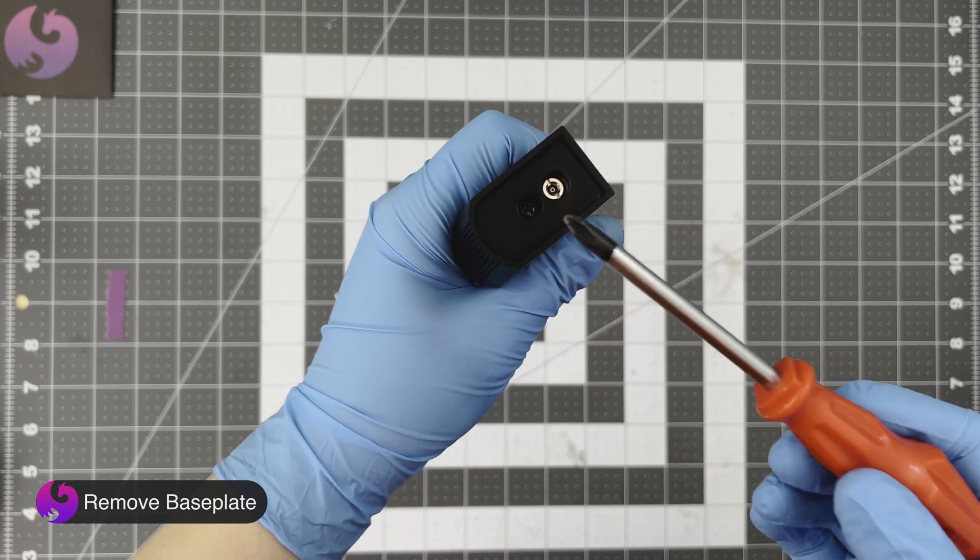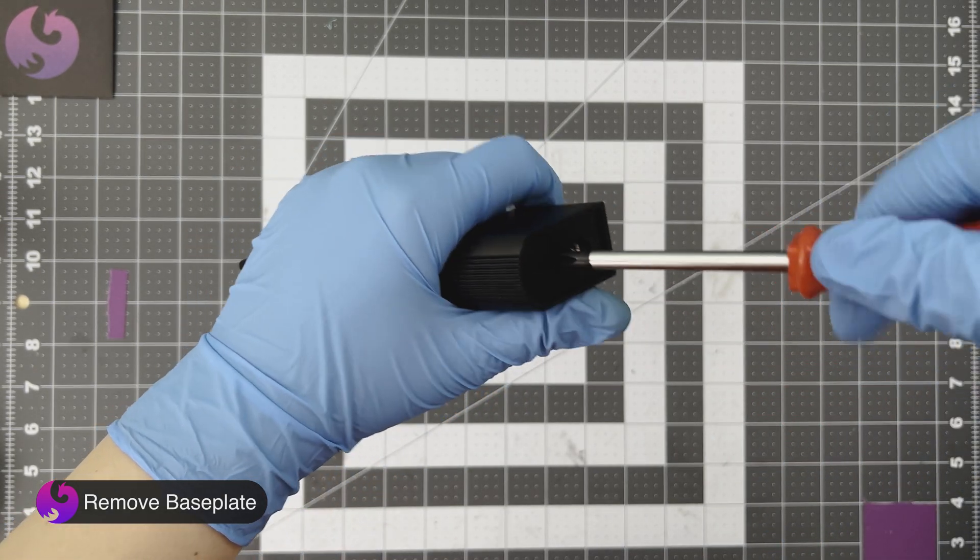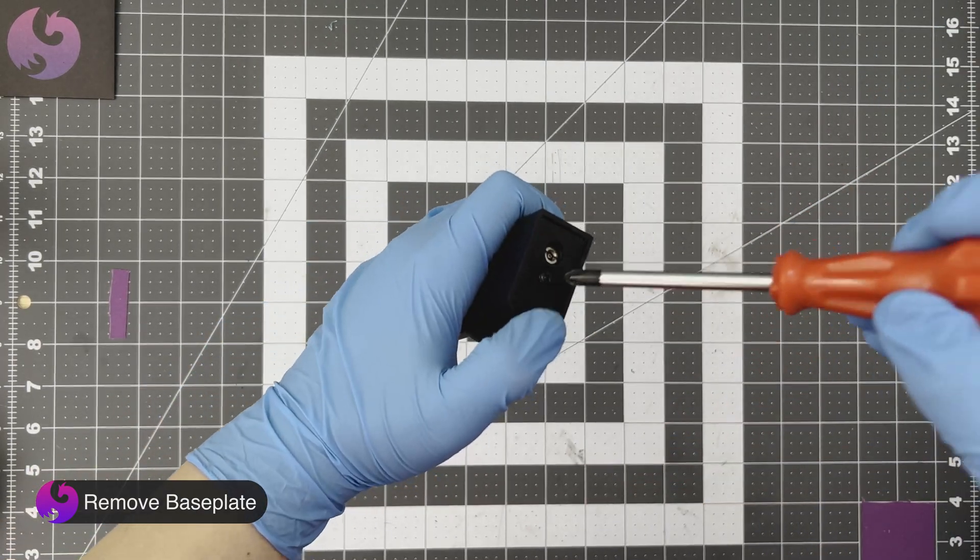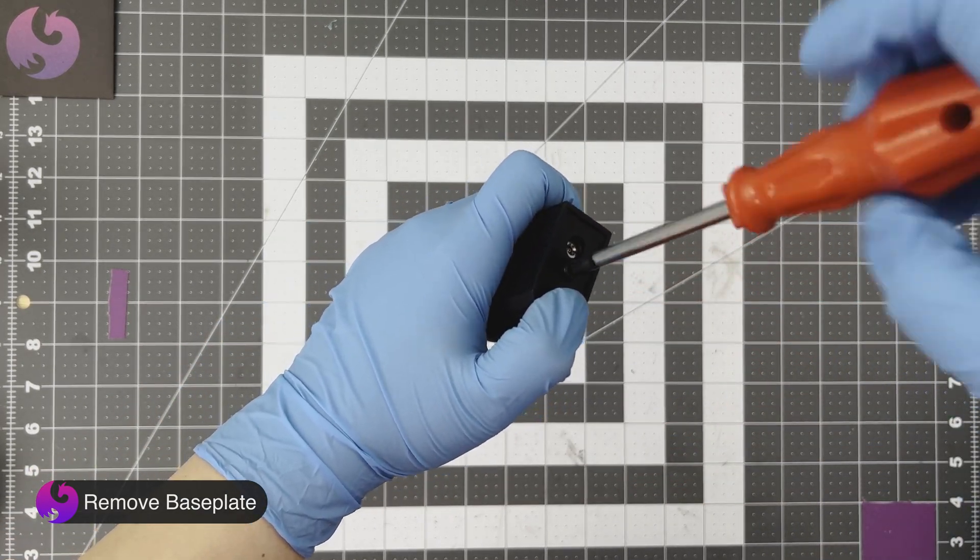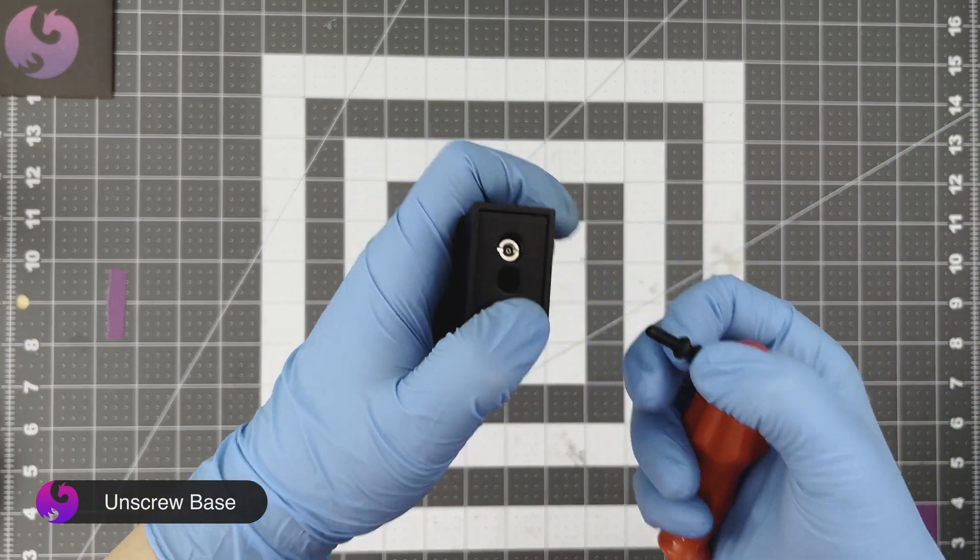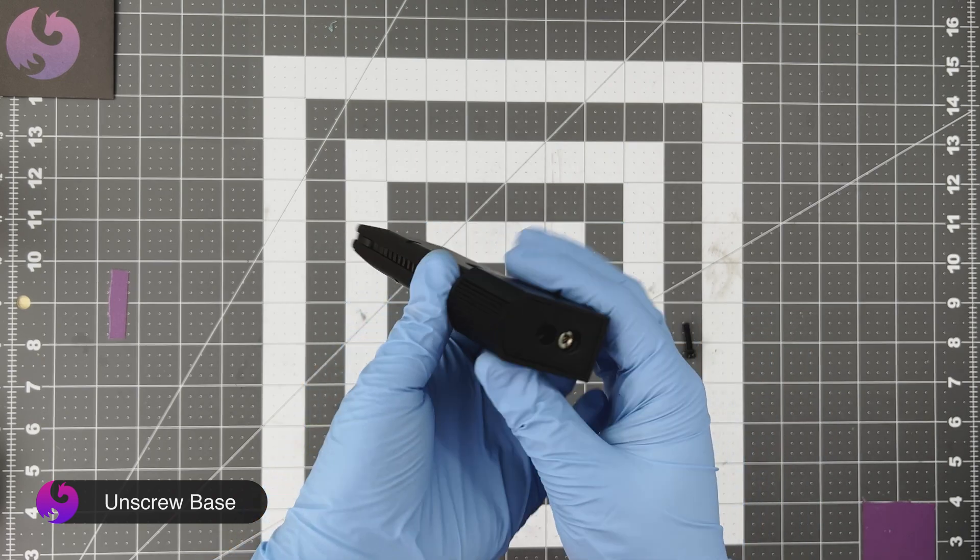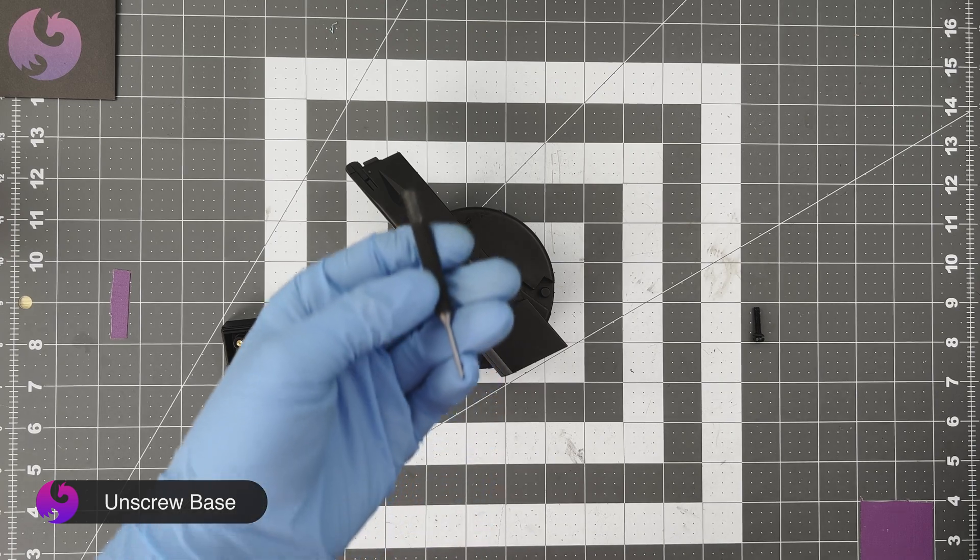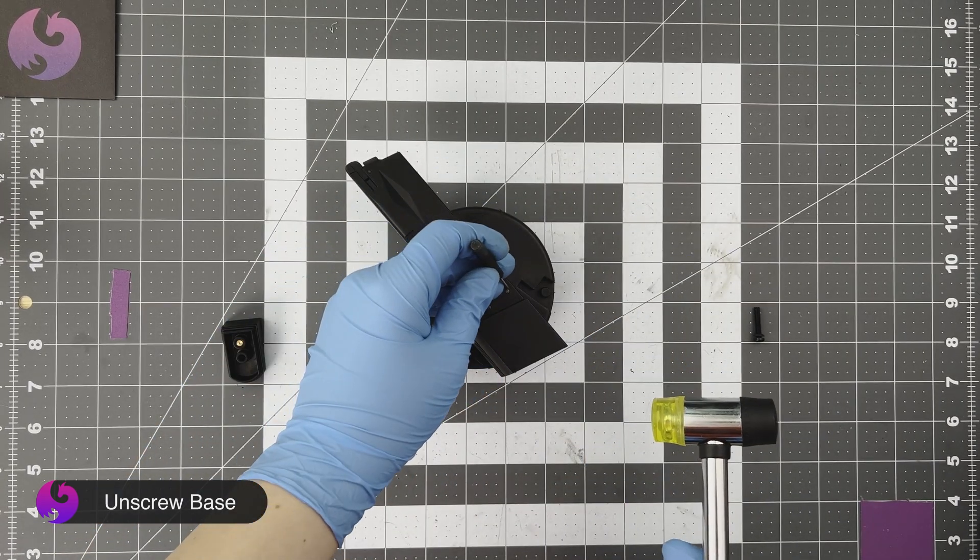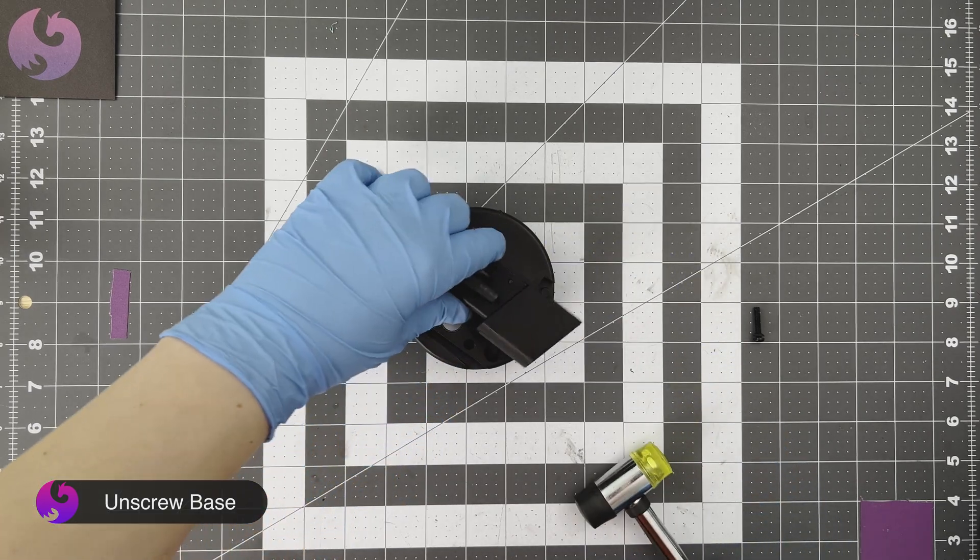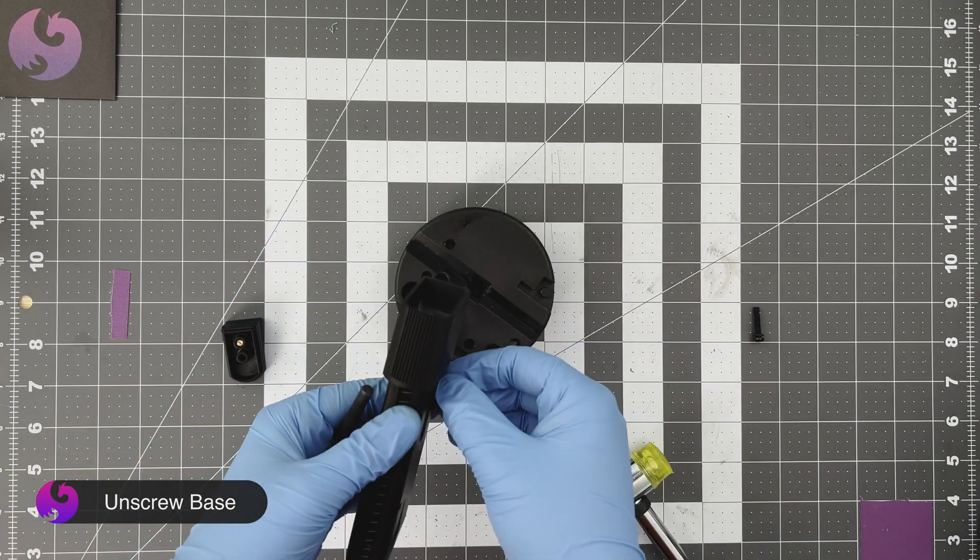After we've made sure there is no gas in the magazine, the first thing to do is use a Phillips-head screwdriver and unscrew the base. Then we're going to take a punch and a hammer and punch out the two pins at the bottom of the magazine. Be careful because it is under spring tension and the spring will fly across the room if you don't hold it in.